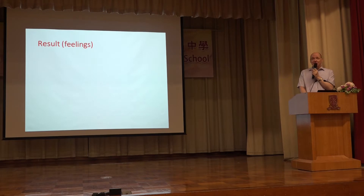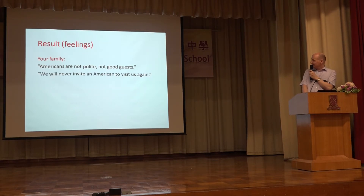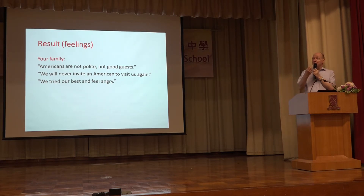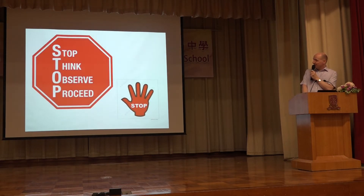And the result after you have this interpretation? Maybe your family says: 'Americans are not polite, they're not good guests. We will never invite an American to visit us again. We tried our best and we feel angry.' Can you see how easy it is to jump to the negative conclusion? Maybe you don't have all the data. So stop. Think again. Observe. Then proceed.